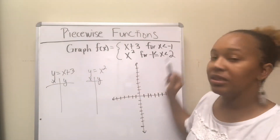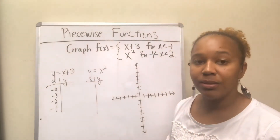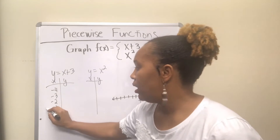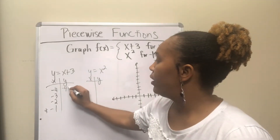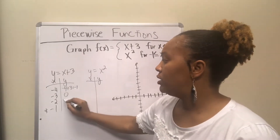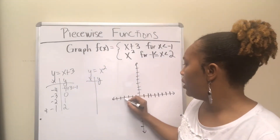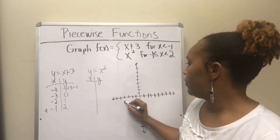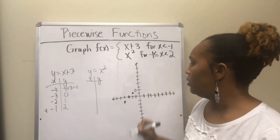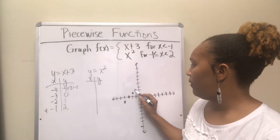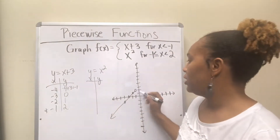For y equal to x plus 3, x is less than negative 1, so pick values like negative 4, negative 3, negative 2. Also plug in negative 1 to see where the graph stops — mark it with a star because negative 1 is not included, so it will be an open circle. Plugging in: negative 4 gives negative 1, negative 3 gives 0, negative 2 gives 1, and negative 1 gives 2. Plot those points and draw a line — it stops at an open circle at (-1, 2).